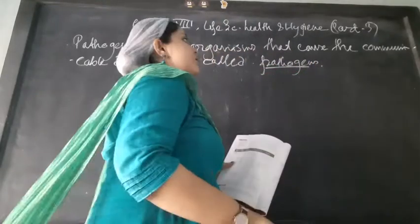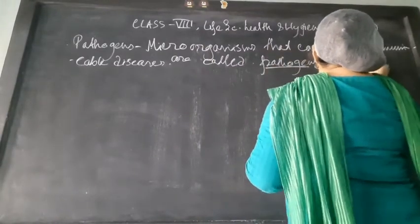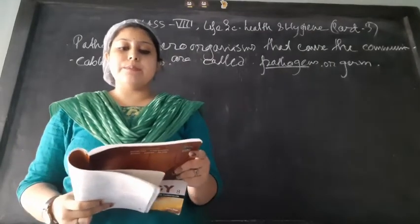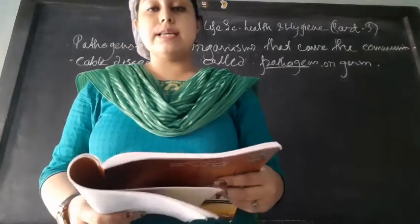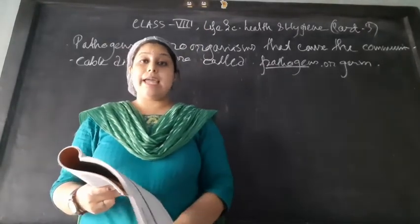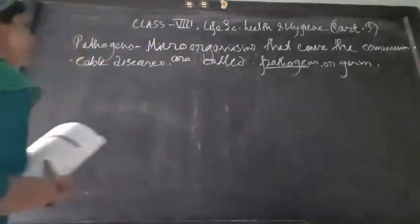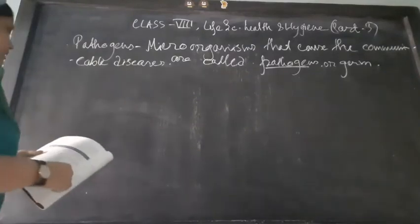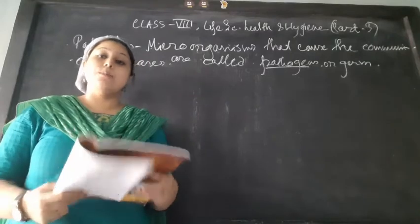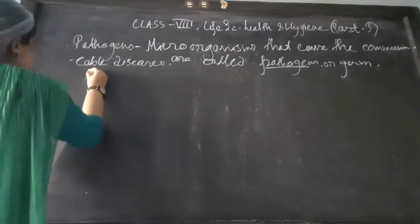So why are pathogens harmful? Because communicable diseases can be spread through them. Some common communicable diseases are influenza, measles, malaria, dengue, chikungunya, and AIDS. Now by a chart we will cover the name of the disease along with the causative agent, mode of transmission, symptoms, and prevention of the disease.